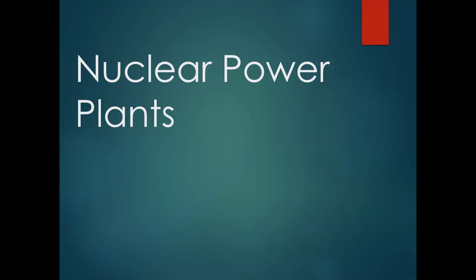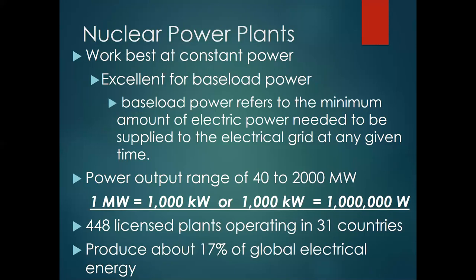Nuclear power plants unfortunately fall into the category of doing base power really well. Like renewable sources, they don't ramp up and slow down very well. So we still rely on coal, oil, and natural gas to be the types of sources that power up and power down quickly — this is called baseload power. Nuclear power plants produce about 17% of all global electricity.